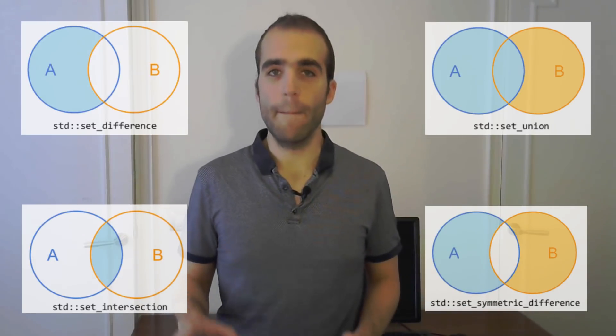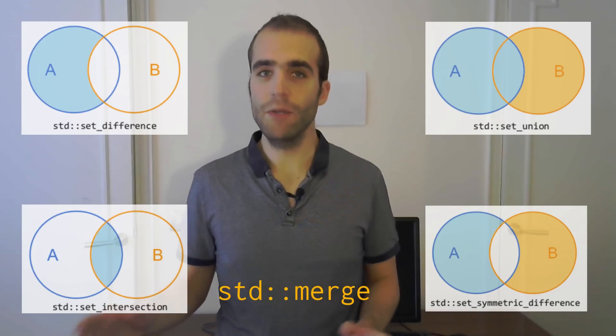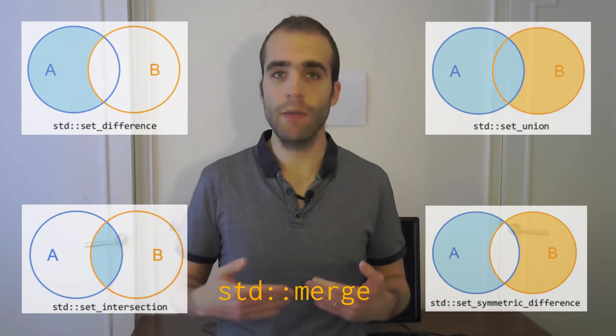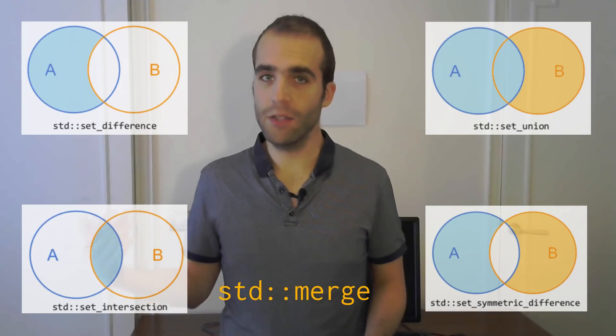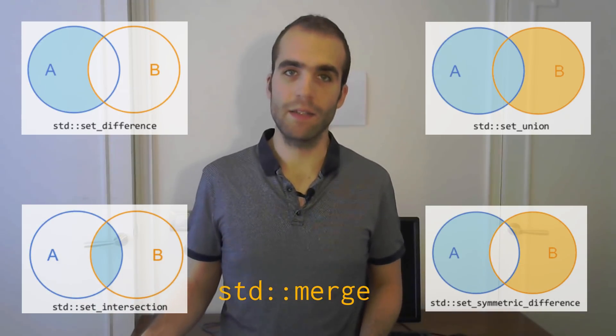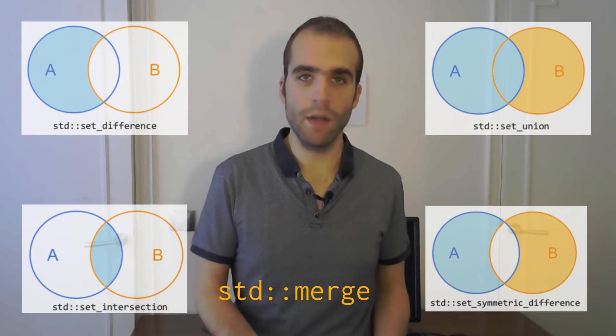And finally, we've got merge, that takes two sets and merges them into a set. So it takes two sorted collections and gives out one sorted one.